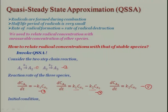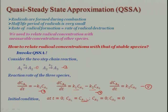What will be the initial condition? At time t=0, CA1 = CA1_initial, CA2 = 0, and CA3 = 0. There will be no CA2 concentration initially, and concentration of A3 will also be 0.